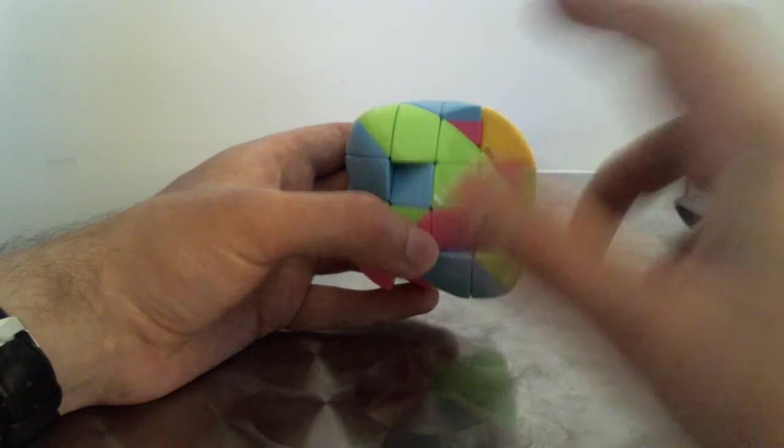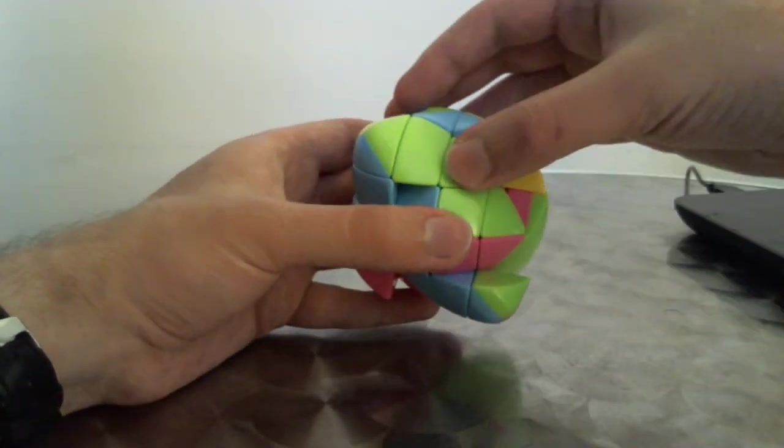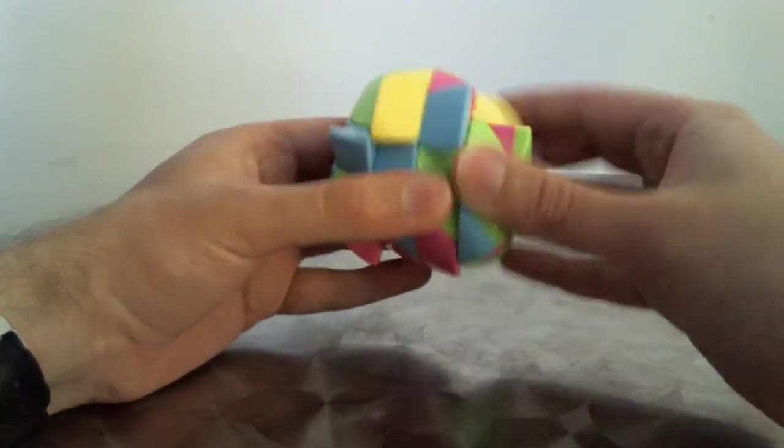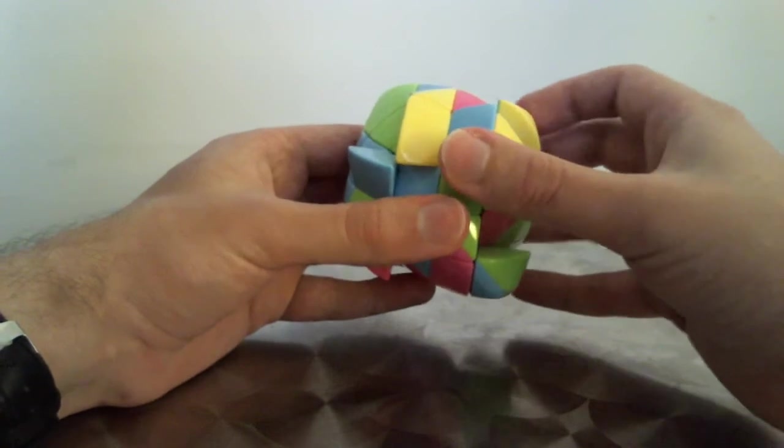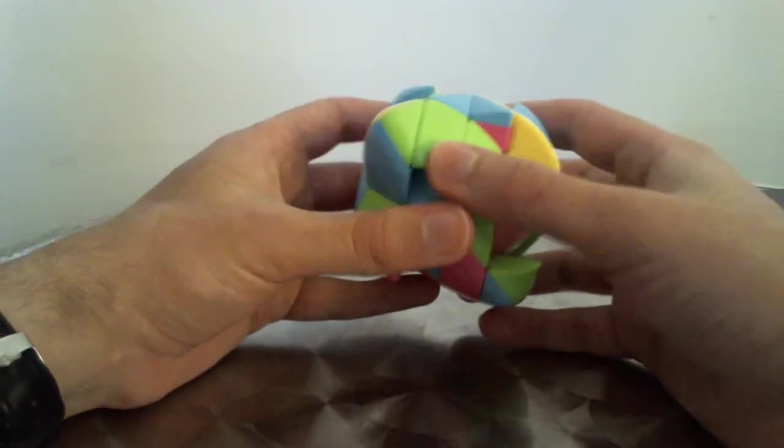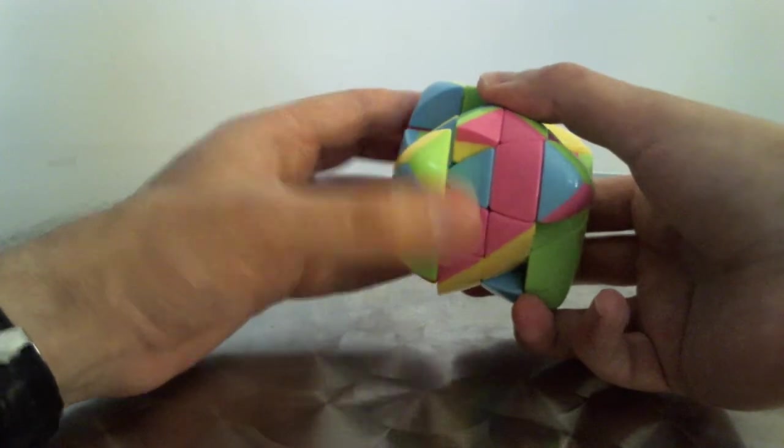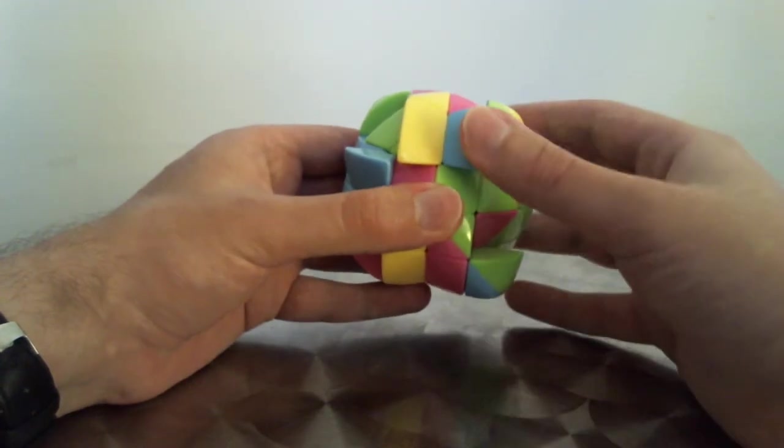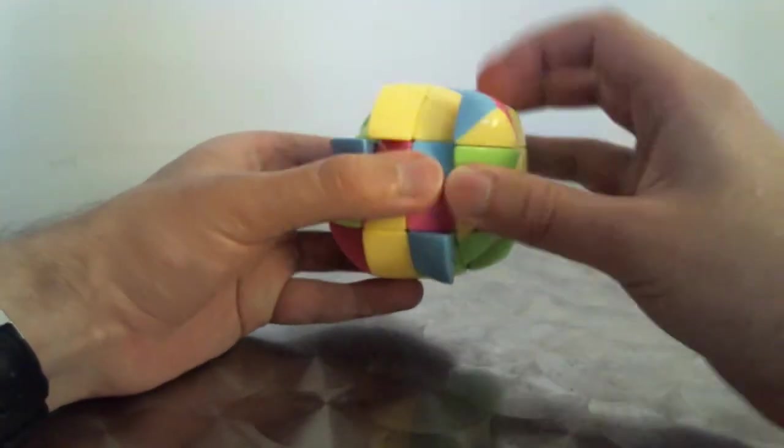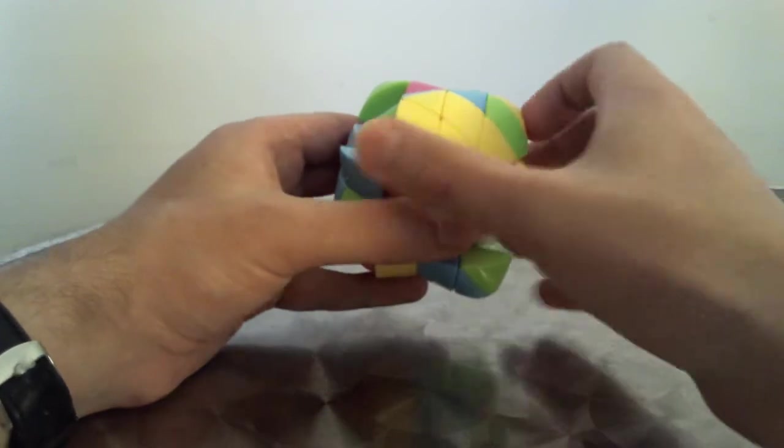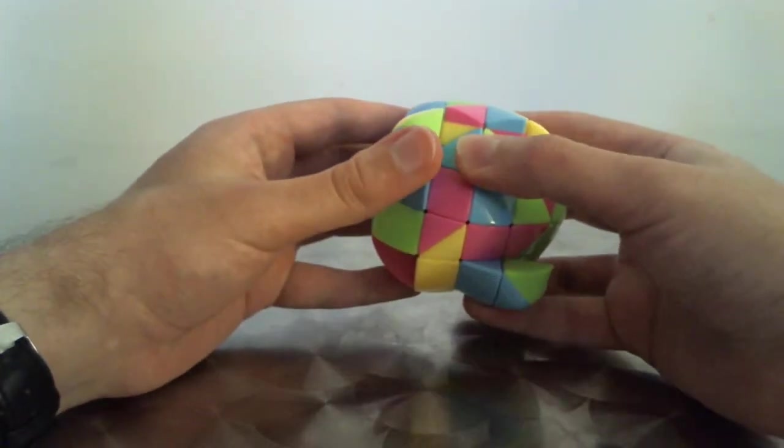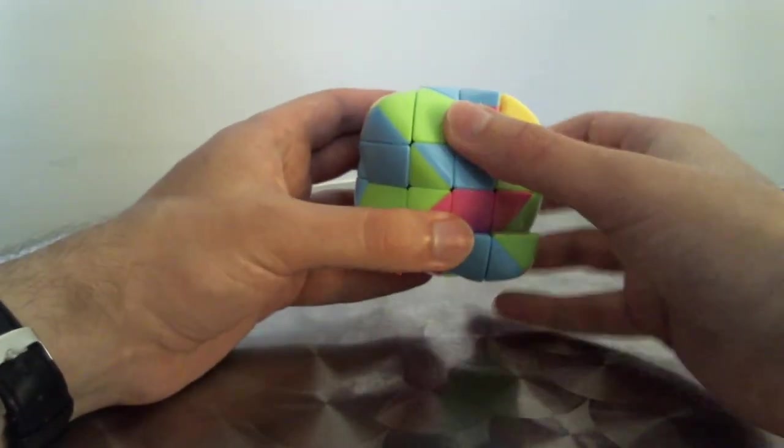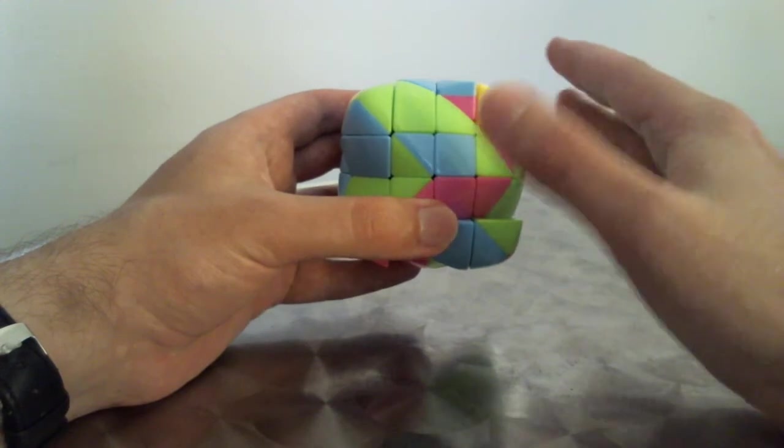Okay, so proceeding from this position, I do again: I do U, and then I do R with the middle right center slice, and then I do U', and then I do L', and then I do U once again, and then I do R' with the right middle slice, and then I do U', and then I do L with the middle left slice.